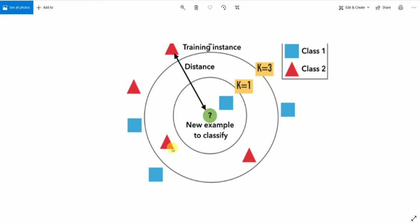And in this diagram, the middle point, the green circle, let's say it is an example, and we have to determine to which class does this belong to, class 1 or class 2.